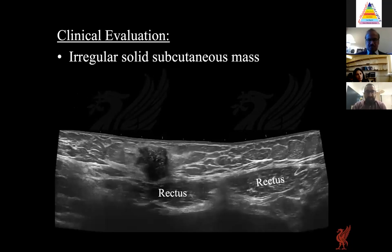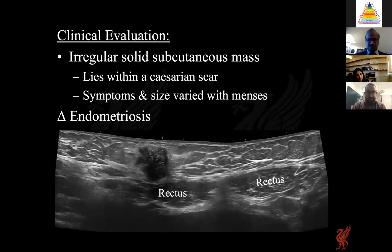In one case, an irregular solid subcutaneous mass in the abdominal wall of a female patient was encountered. Speaking to the patient revealed a prior caesarean section, and the mass was in line with the scar. When questioned, the patient reported that symptoms varied with her menstrual cycle. Taking all factors together including its location, a quite specific diagnosis of endometriosis was reached.